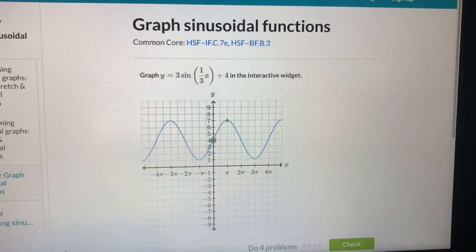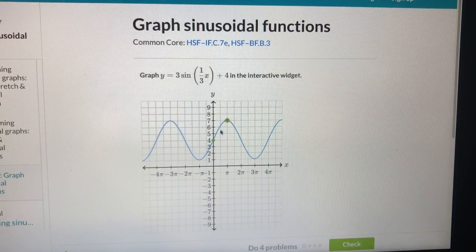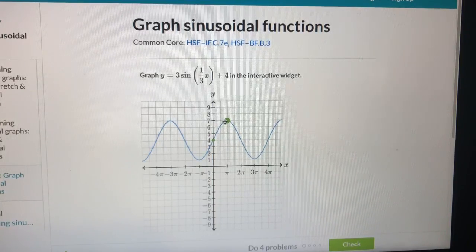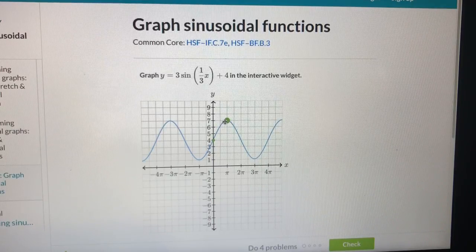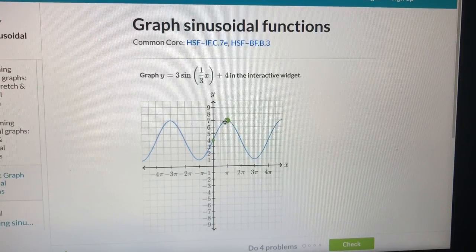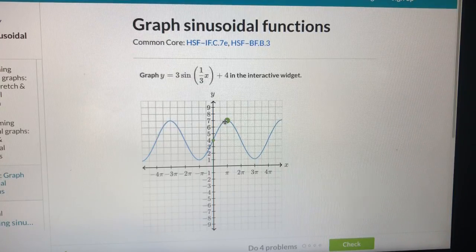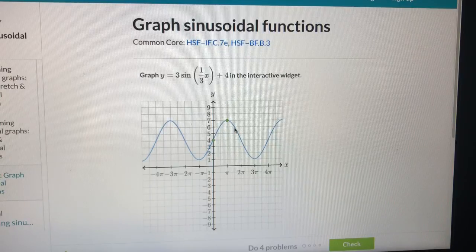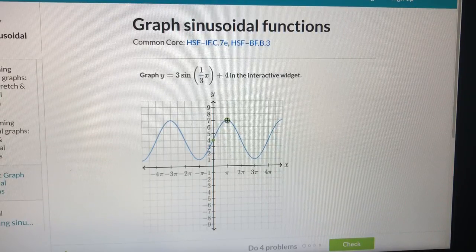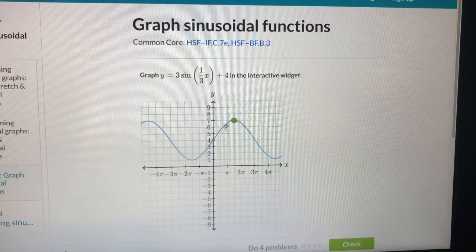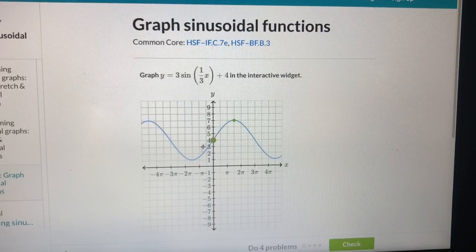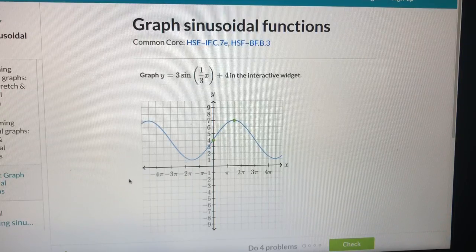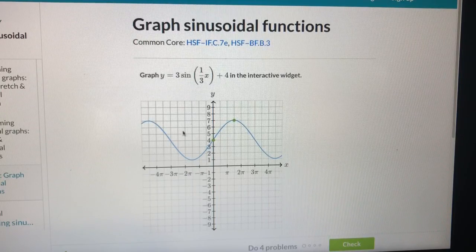And this, from midpoint to its highest point, is a quarter of the period. So 1.5, 6 divided by 4 is 1.5. So 1.5 is a quarter of the period. So the whole period, this should be the function of it.